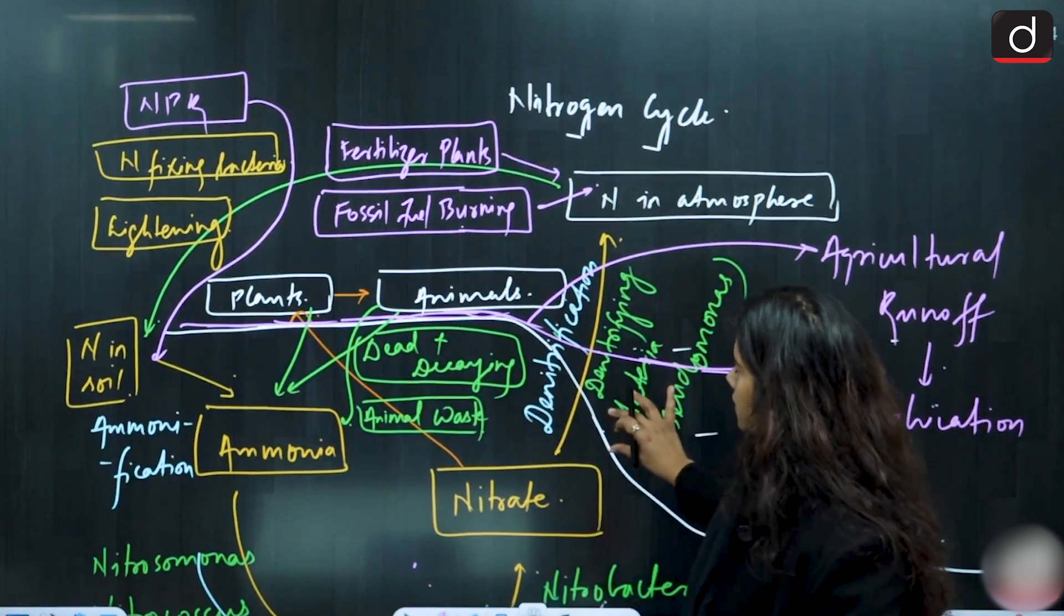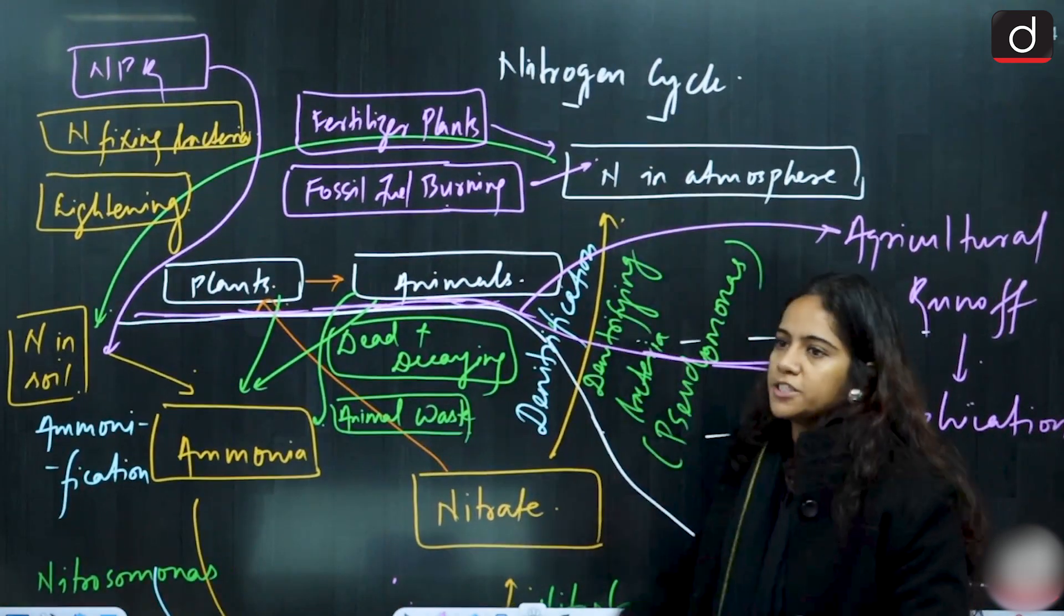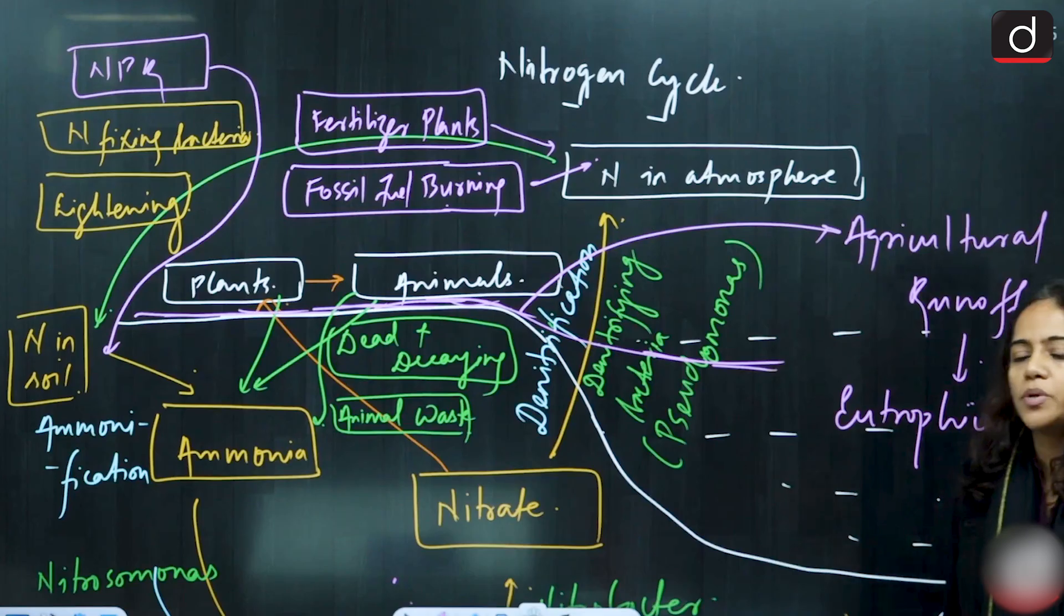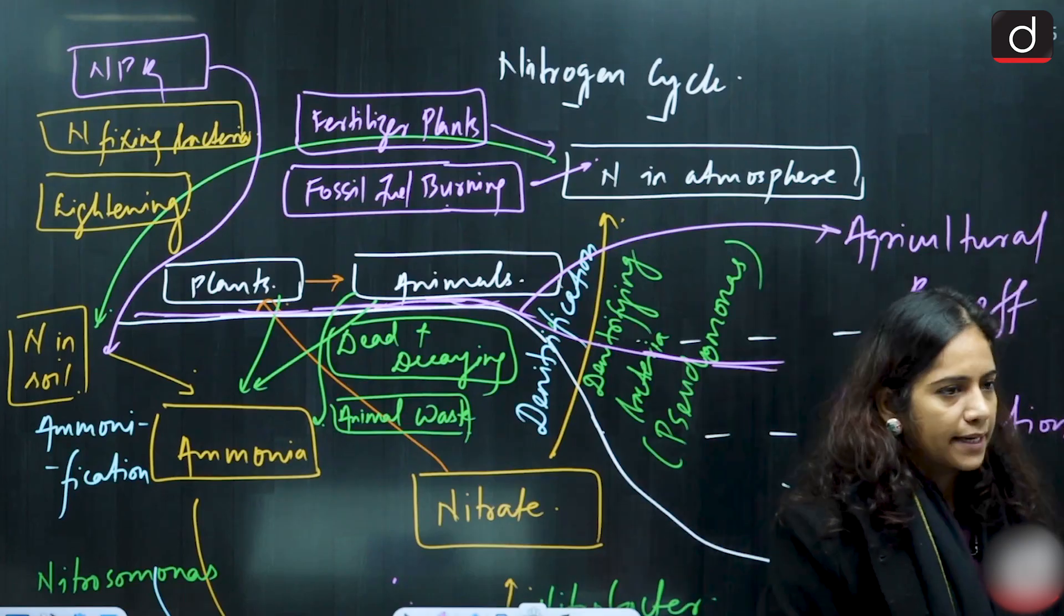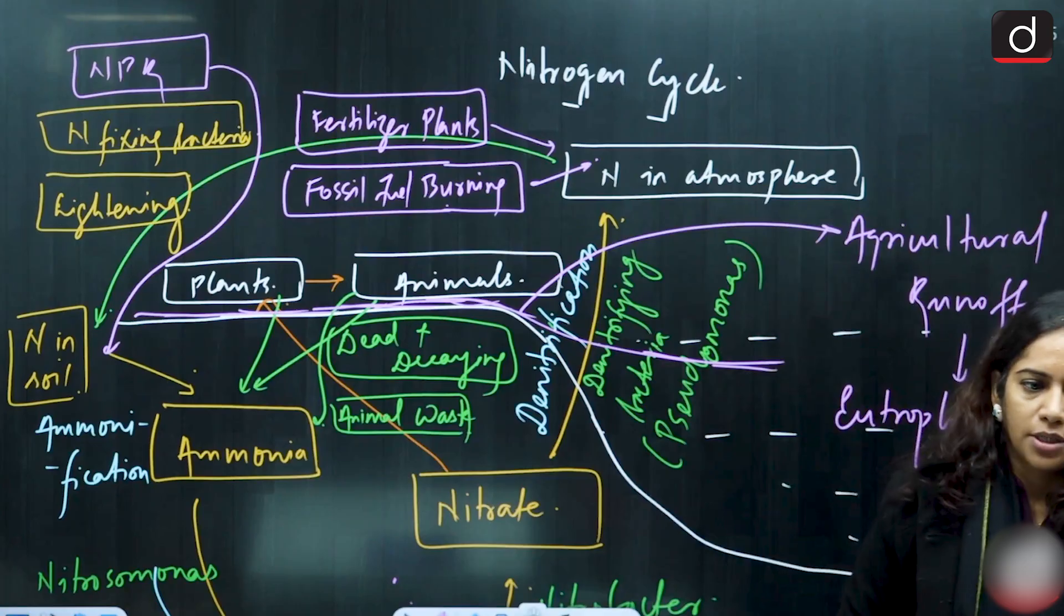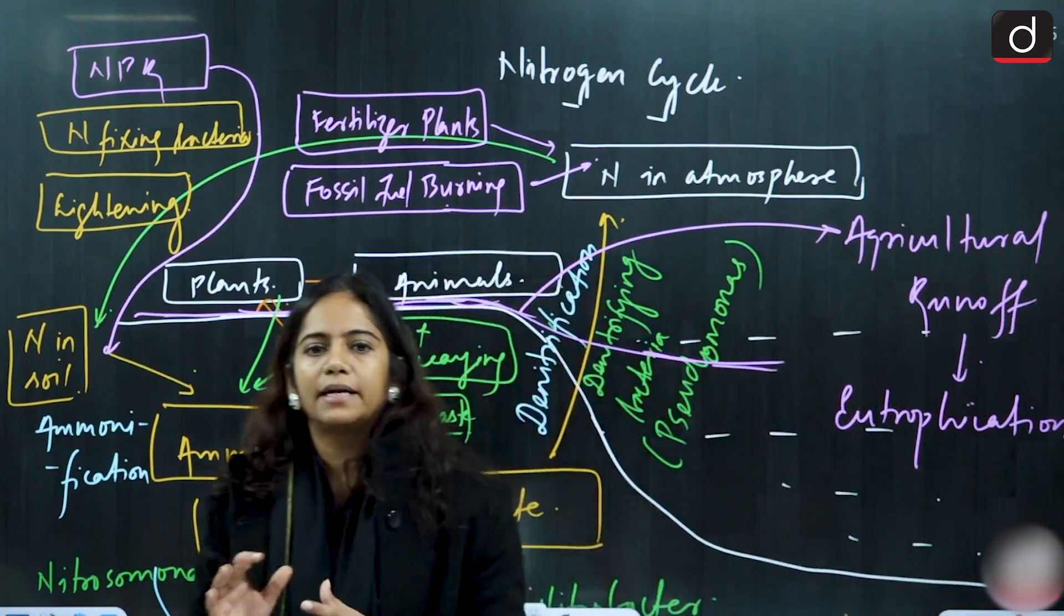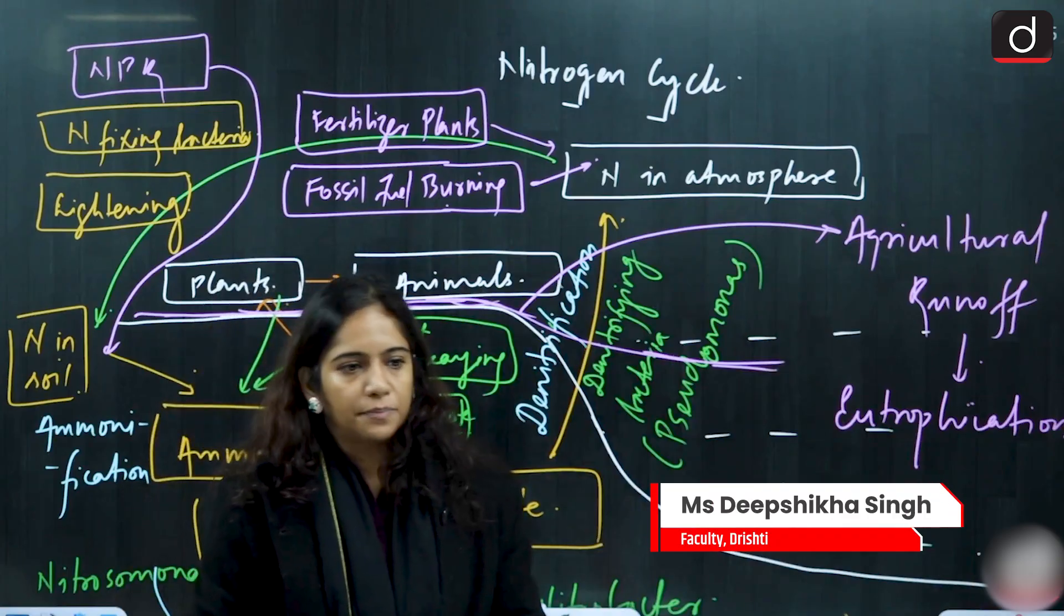So the nitrogen cycle, as you can see, nitrogen is present in the atmosphere. The carbon was also present in atmosphere but the plants were taking the carbon from the atmosphere directly. Not the case for nitrogen - nitrogen is not able to be taken by the plants directly from the atmosphere or from the air.